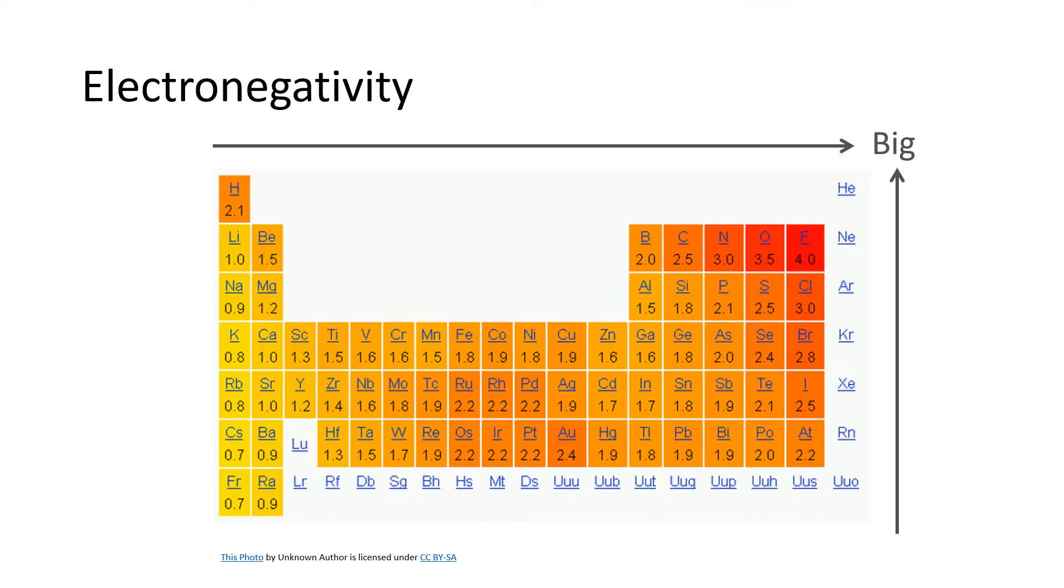This version of the periodic table is oriented more like we're used to seeing it, and it's using that Pauling scale for electronegativities by putting fluorine at 4.0. The thing about electronegativity is that the closer an element is to the upper right hand corner of the periodic table, the bigger the numerical value for its electronegativity.